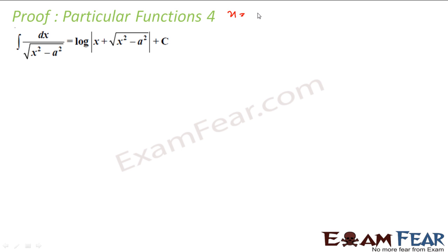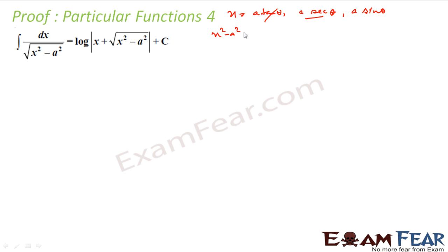Here also, I can put x equal to either a·tan θ, a·sec θ, or a·sin θ. Tan θ is not possible because it is minus. So I have the option of choosing sec θ or sin θ. Let's try a·sec θ. If I put x equal to a·sec θ, my x²–a² becomes a²·sec²θ – a², and sec²θ – 1 is nothing but tan²θ.